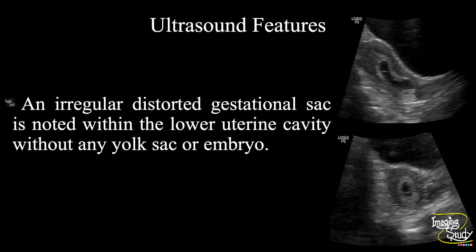In summary, an irregular distorted gestational sac is noted within the lower uterine cavity without any yolk sac or embryo, suggesting this as a case of incomplete abortion.